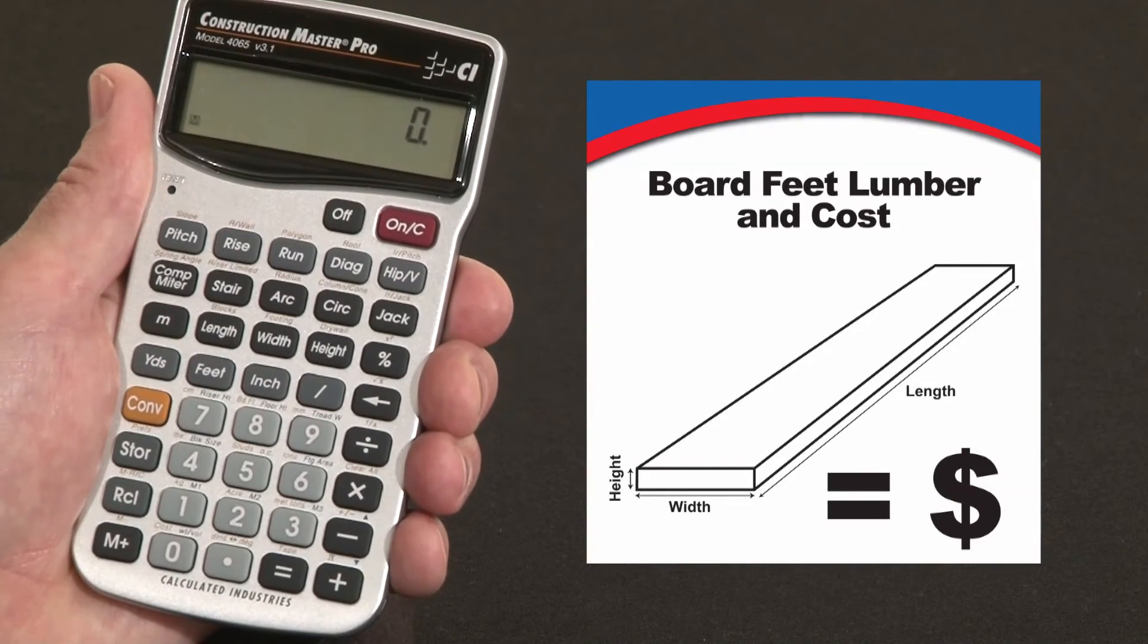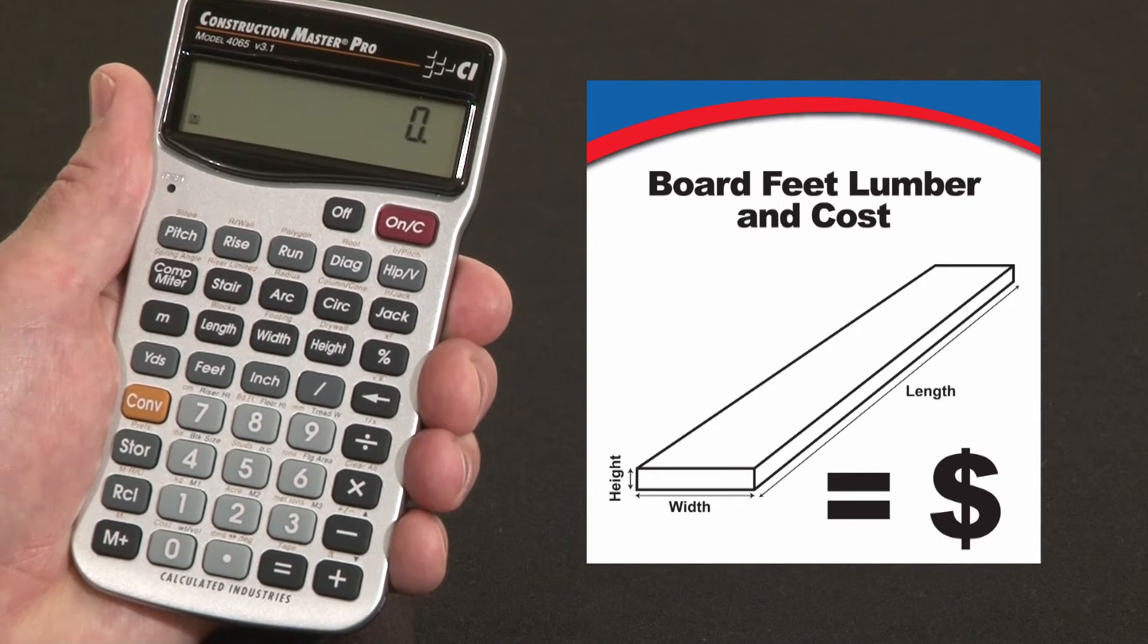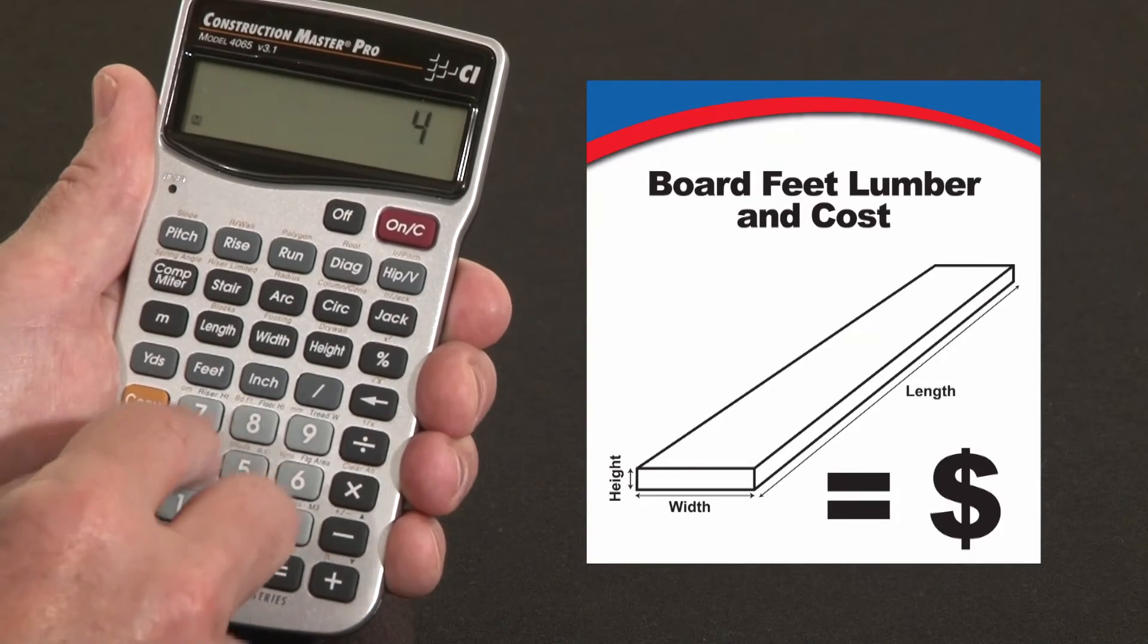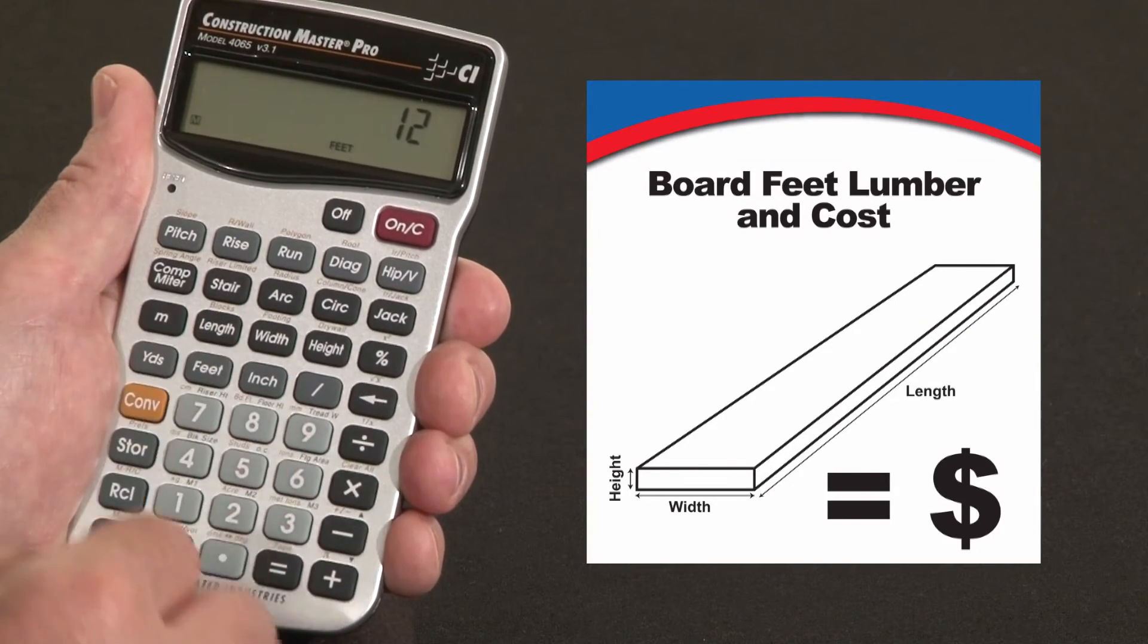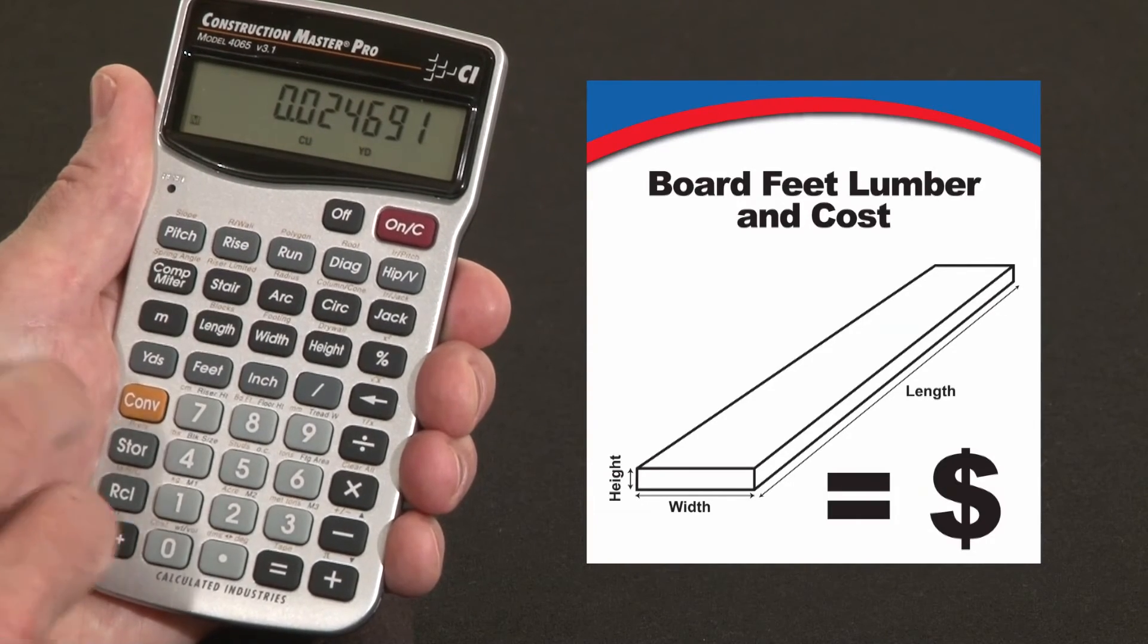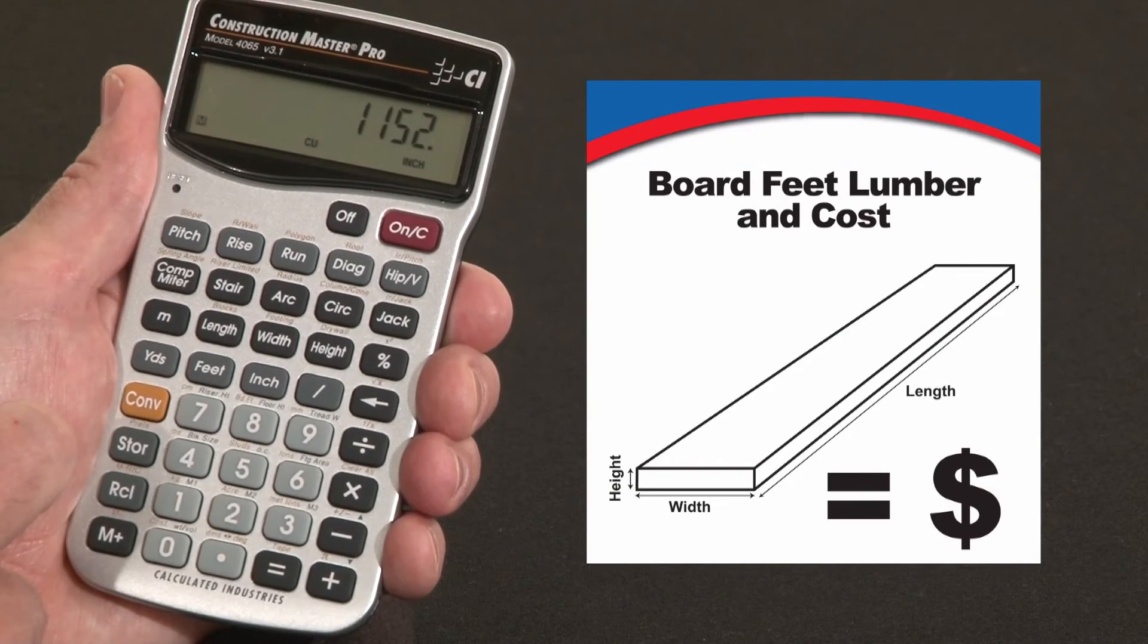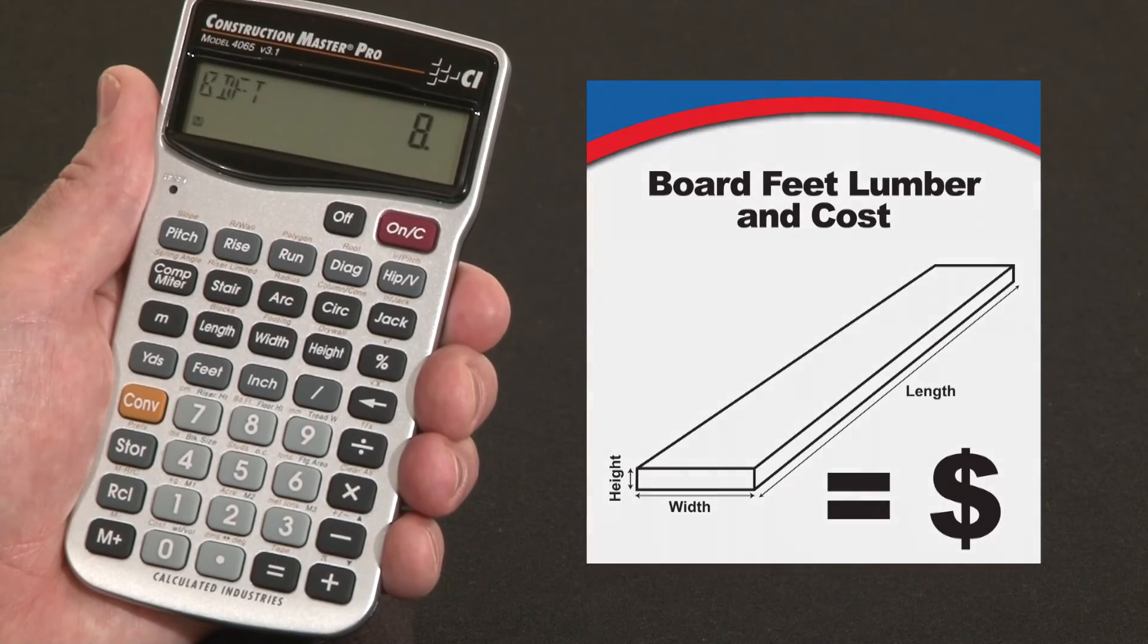You can also calculate board feet as a cubic volume number, since we know that a board foot is 144 cubic inches. Say you've got a 2 inch by 4 inch by 12 feet board. That's a whole bunch of cubic yards which is really irrelevant in this example. You can convert that to cubic inches if you like, but more appropriately is convert to board feet. So the same 8 board feet.